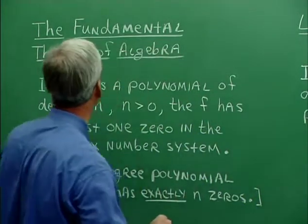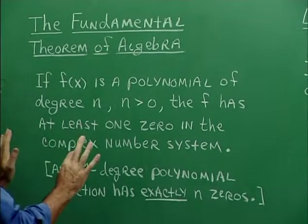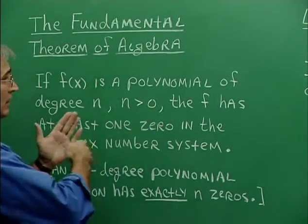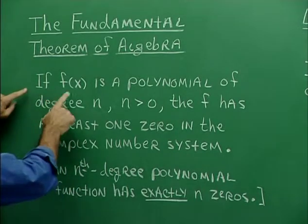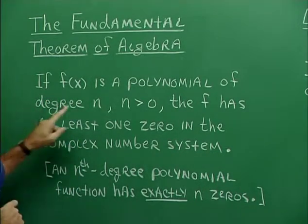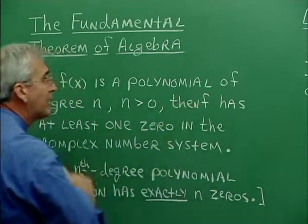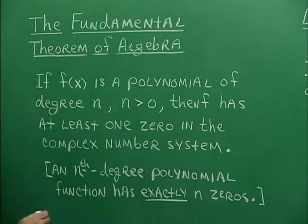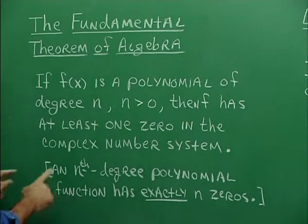And that's the essence of the Fundamental Theorem of Algebra. The Fundamental Theorem of Algebra — it sounds pretty auspicious. And by the way, there's a Fundamental Theorem of Arithmetic, a Fundamental Theorem of Calculus, and a Fundamental Theorem of Geometry. Here's the Fundamental Theorem of Algebra: if f(x) is a polynomial of degree n, where n is greater than zero, then f has at least one zero in the complex number system. Expanding the idea, an nth degree polynomial function has exactly n zeros.